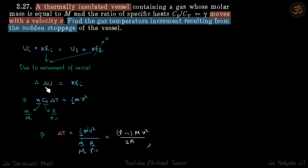We need to find delta T. For that let's find delta U. So delta U from here is equal to KEi and delta U we can write as N Cv delta T.